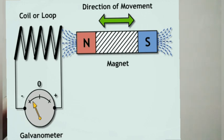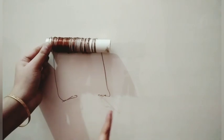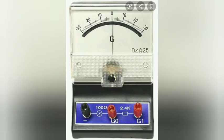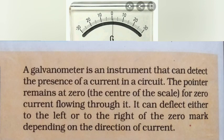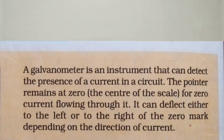Now the question arises, what is the role of this galvanometer? Galvanometer is an instrument that can detect the presence of current in a circuit. It shows the pointer at zero on the zero scale when there is no current flow. But it can deflect towards left or right of the zero mark depending upon the direction of current.